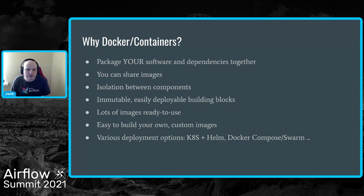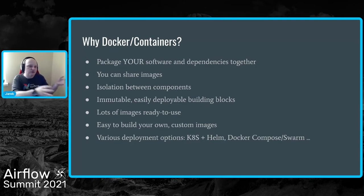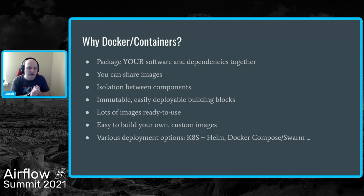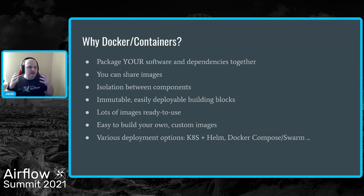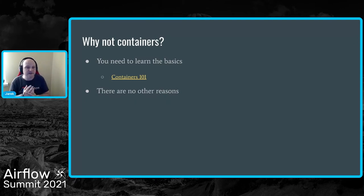There are also a lot of ready-to-use images provided at the Docker registry. But it's also extremely easy to build your own images — you just have to break the barrier. Just build images, because it's super easy, and this is something we want to convince you of during this talk. There are all the different deployment options: Kubernetes, Docker Compose, Swarm, and many others. This is standardized — it's an open standard. It's not only Docker that implements it; there are other ways to build and deploy containers that do not involve Docker, because it's an OCI standard — Open Container Initiative.